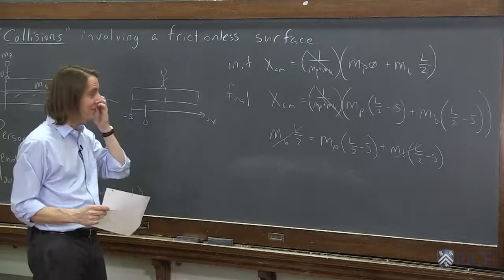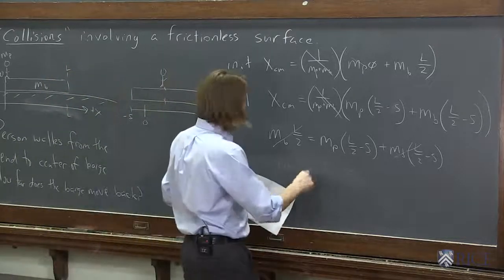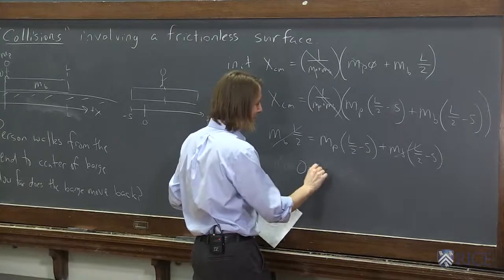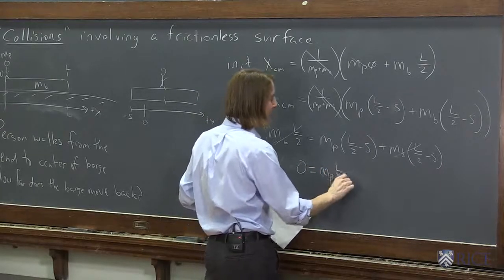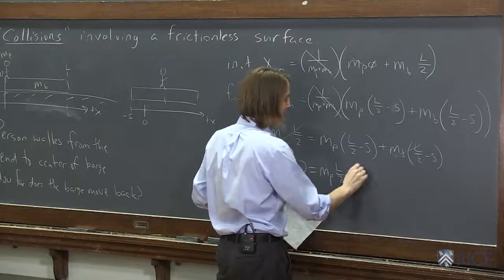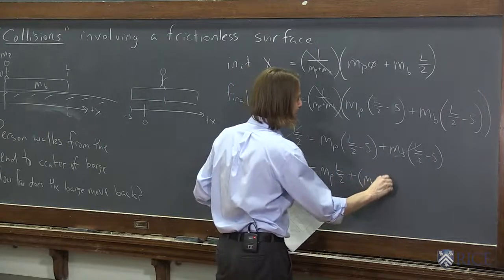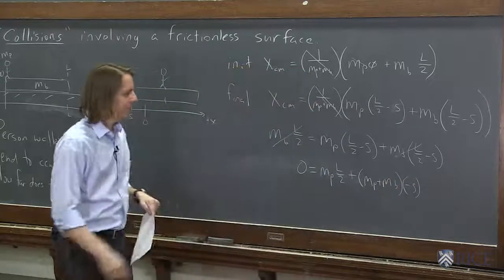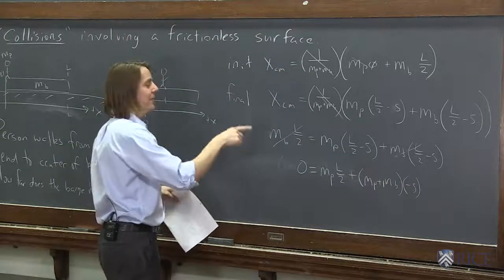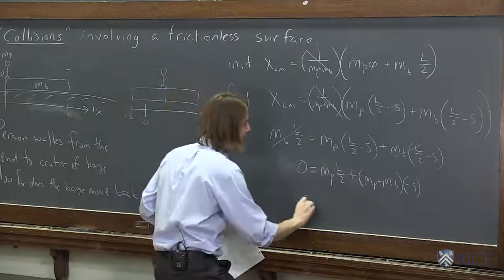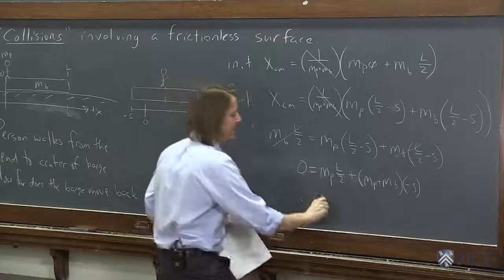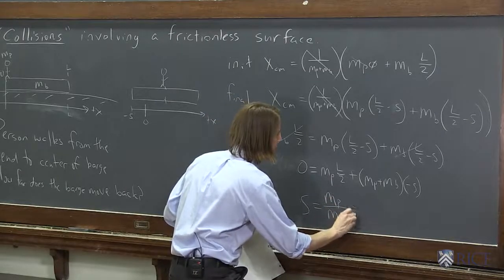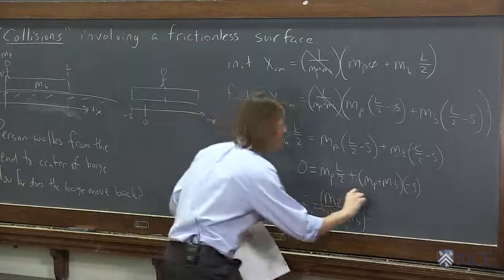Let's solve this now. We're solving this for s. Let's say this is equal to zero equals mp times l over 2 plus mp plus mb times minus s. Let's bring that over here and then divide and solve for s. And what you get is mp over mp plus mb times l over 2.